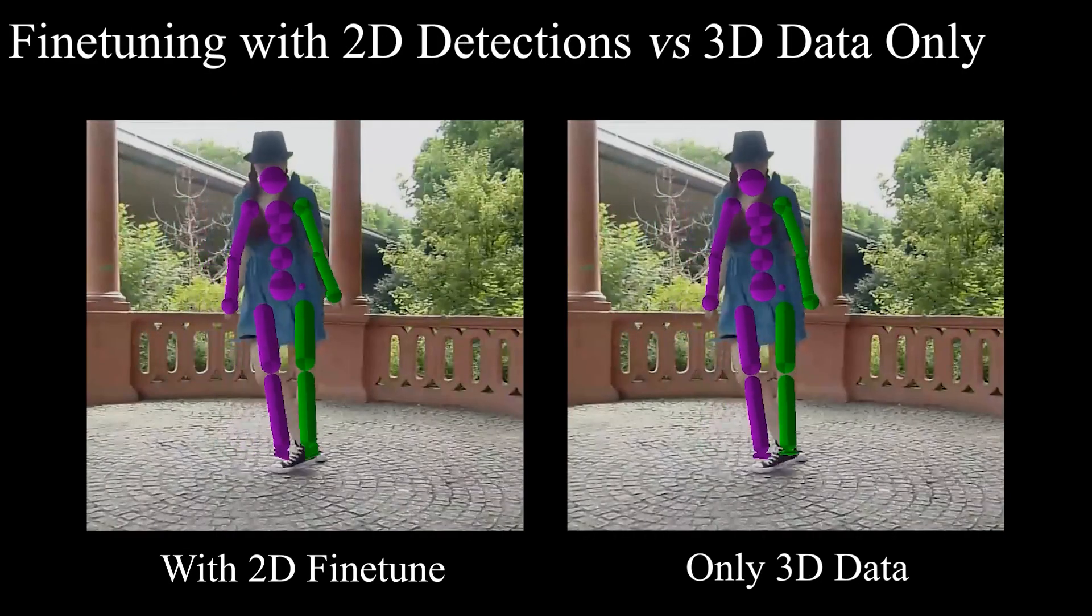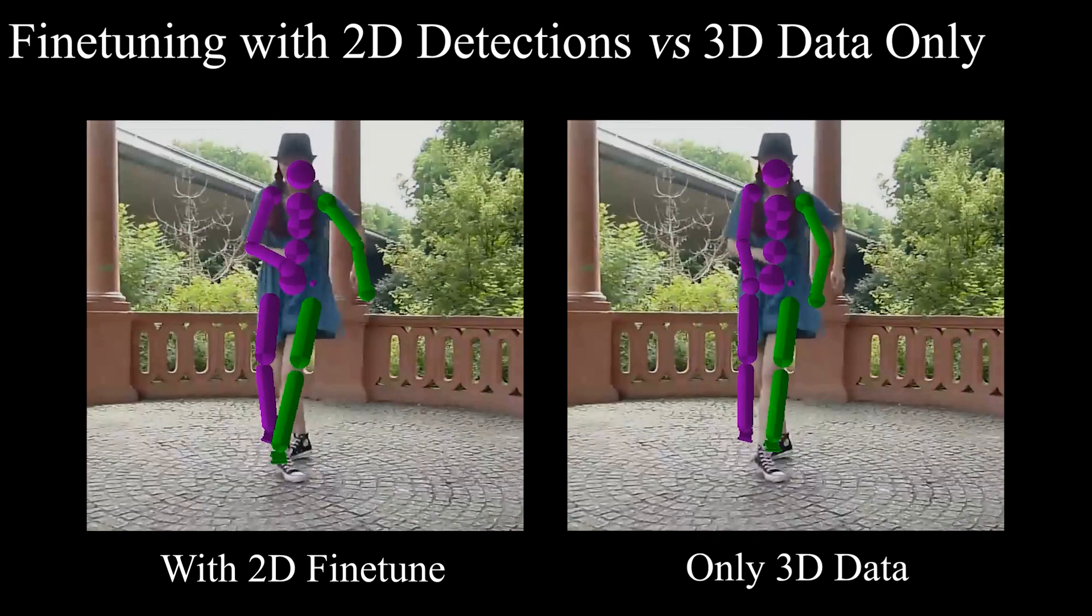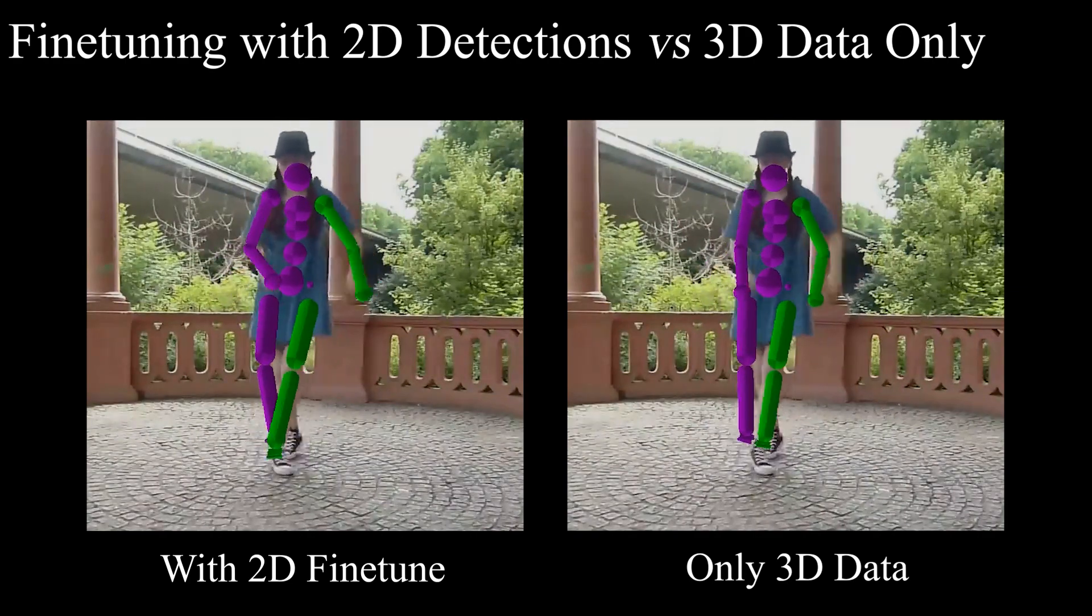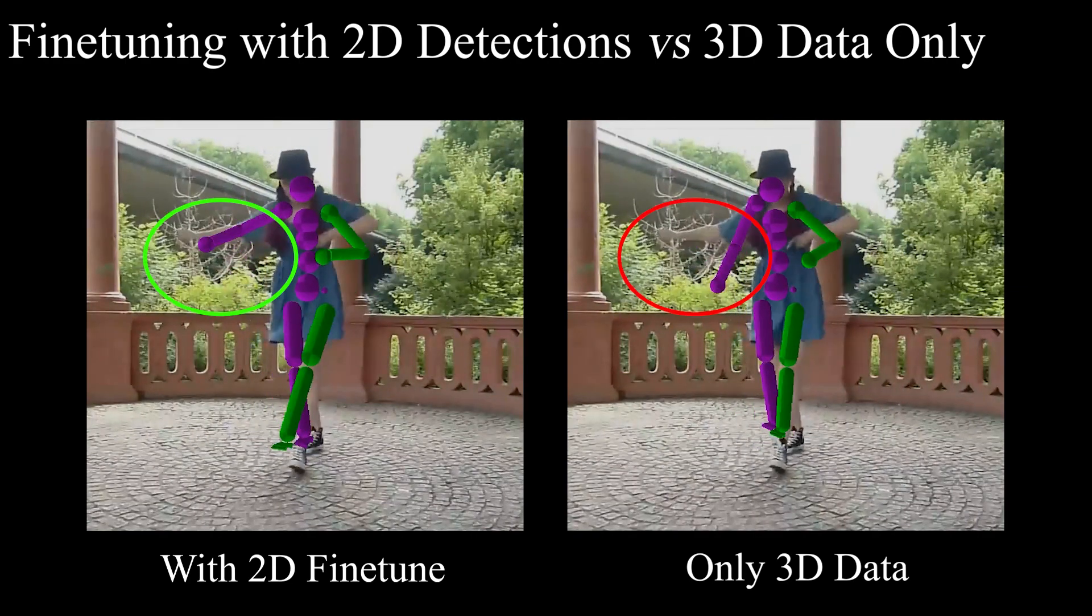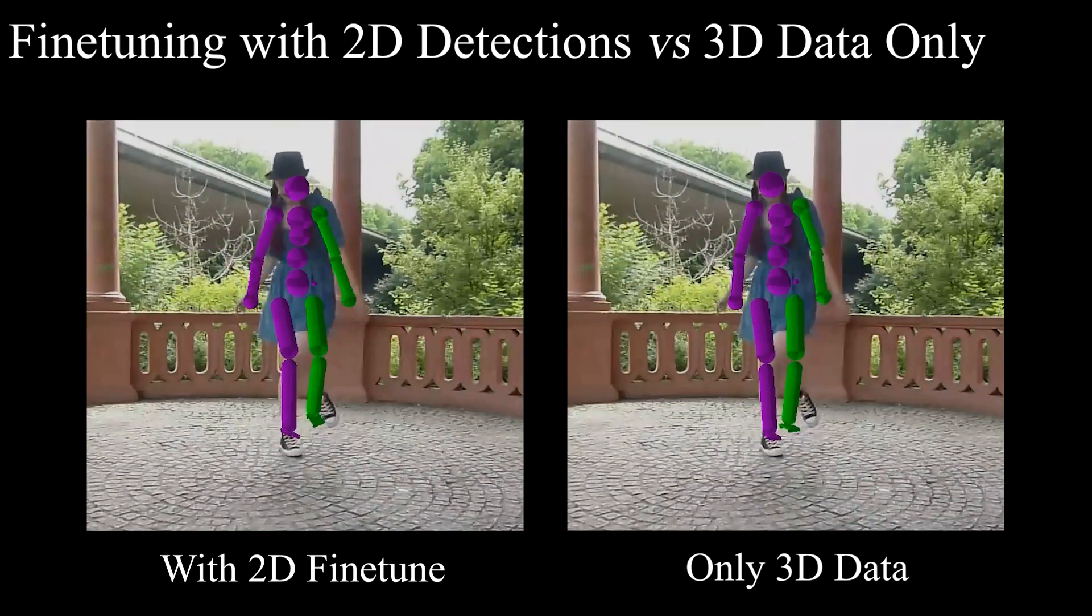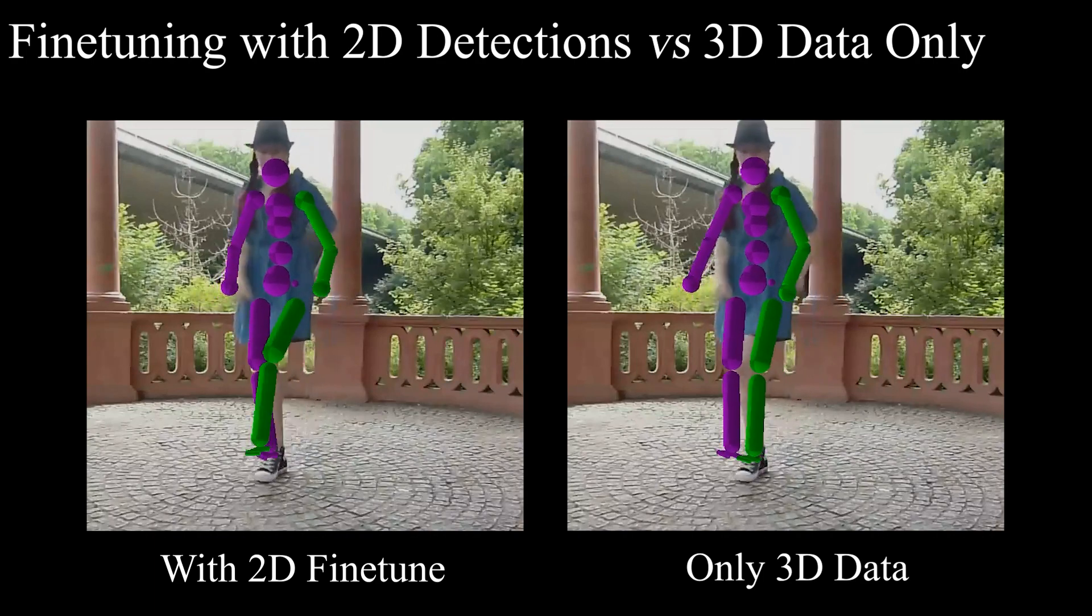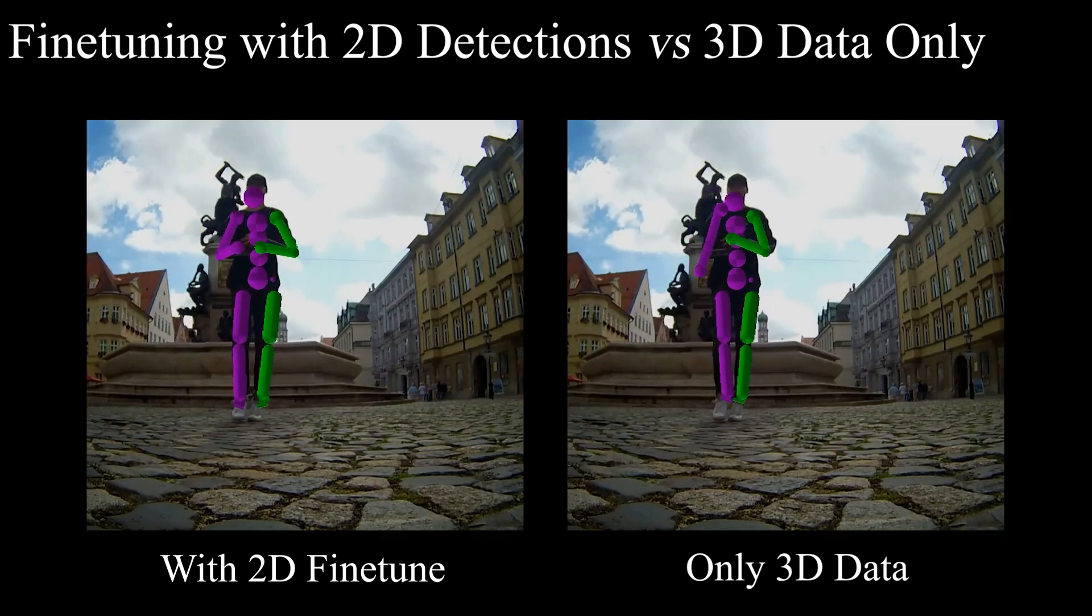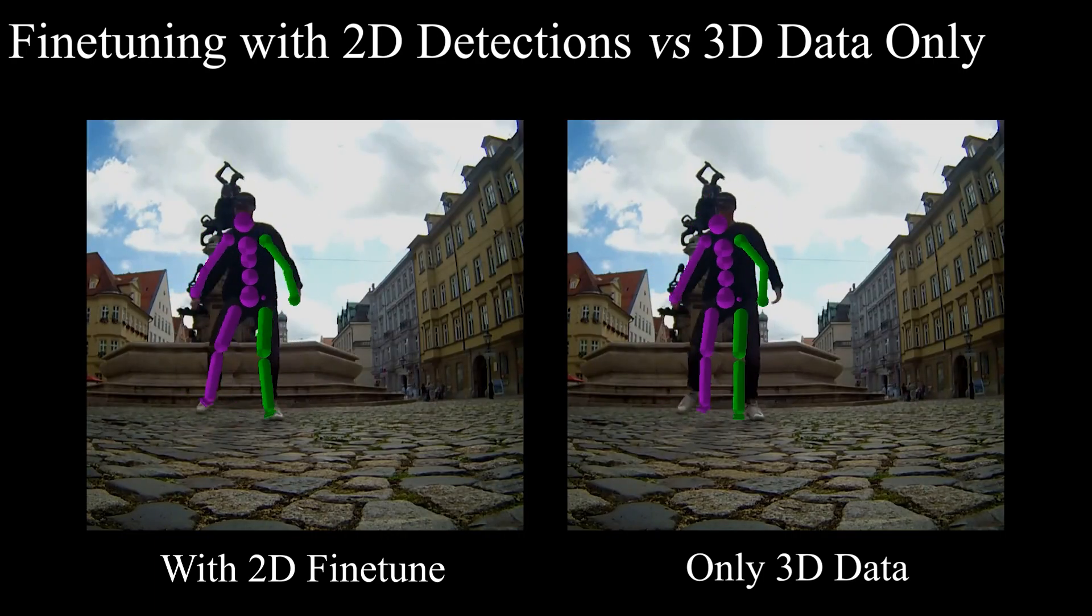Our fully differentiable architecture with physics-based constraints allows fine-tuning for specific motion types. Here, we show the results with and without fine-tuning using 2D keypoints. As can be seen, after the fine-tuning, the results have more accurate articulations and better overlay to the input views compared to the network trained with 3D data only.